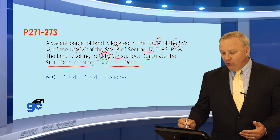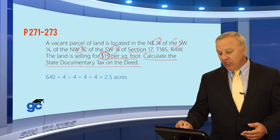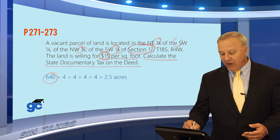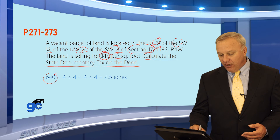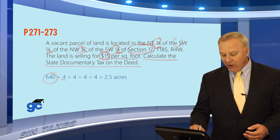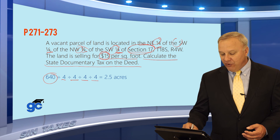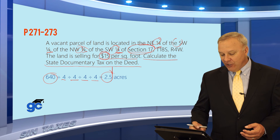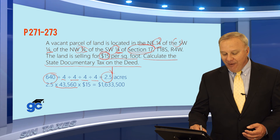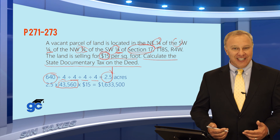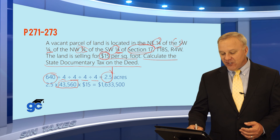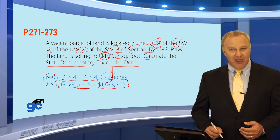To figure out the acreage, take the section of 640 acres and divide by your bottom numbers: 640 divided by 4, divided by 4, divided by 4, divided by 4 gives you 2.5 acres. An acre is 43,560 square feet — the memory aid is 4 and 3 is 7, 5 and 6 is 11, so the acronym is 711. Then: 2.5 acres times 43,560 times $15 per square foot gives a sales price of $1,633,500.